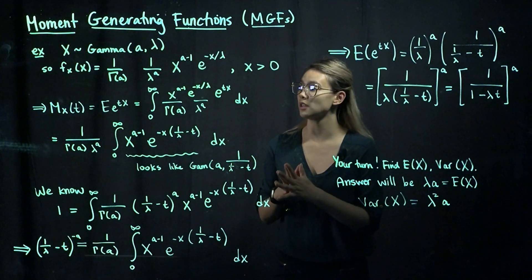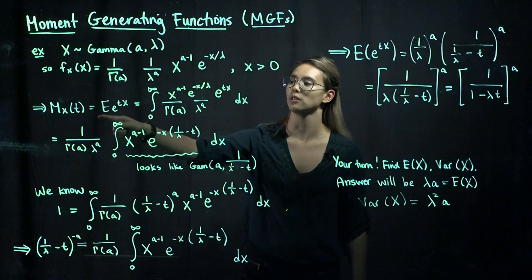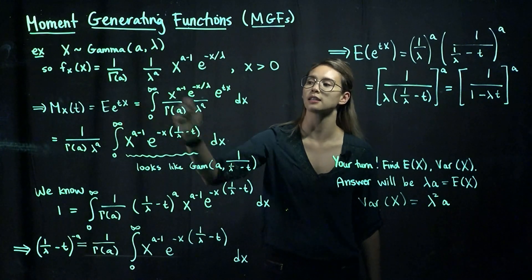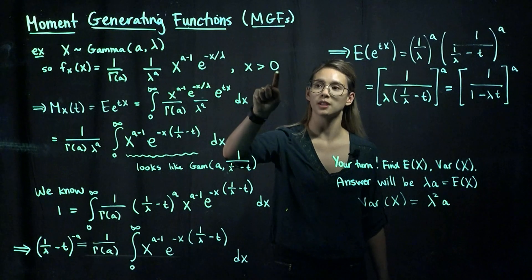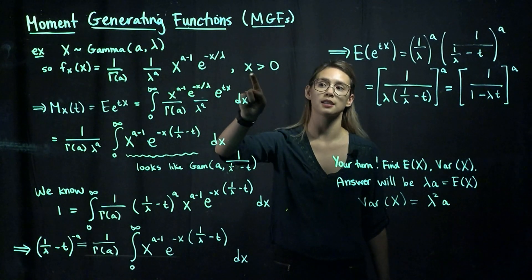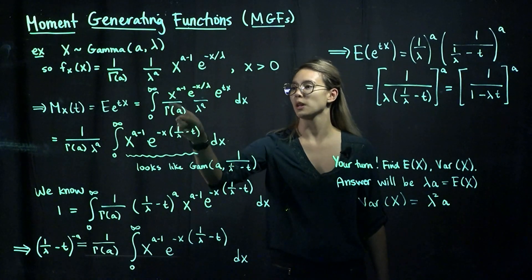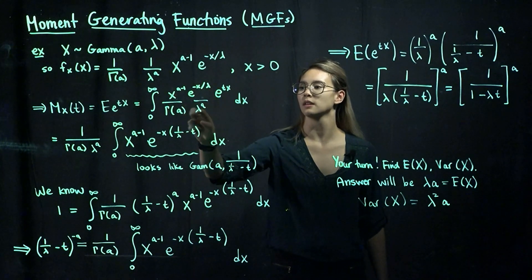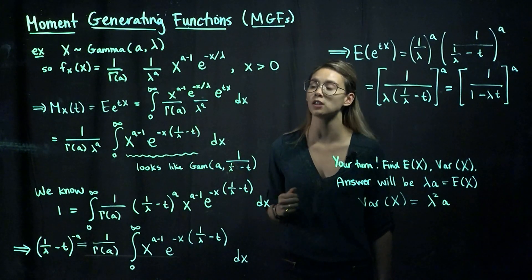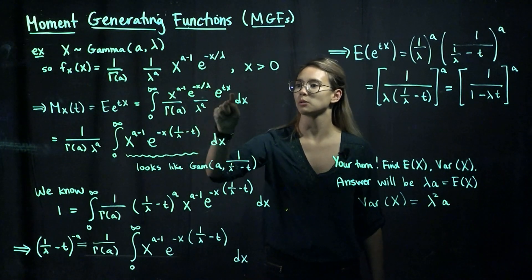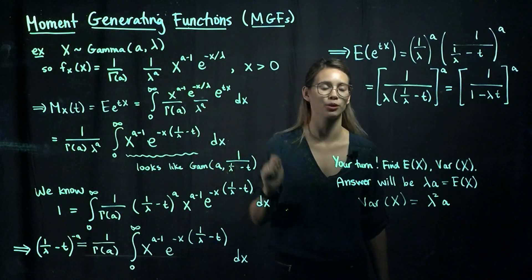Now let's find the MGF. Starting with the definition: MGF is equal to the expected value of e to the tx. We know that an expected value is an integral, so we're going to integrate from 0 to infinity because x takes on values from 0 to infinity. We have our PDF here, and then e to the tx. When looking for the expected value of a function of x, we have the function of x and then the PDF of x, and then we integrate with respect to x.